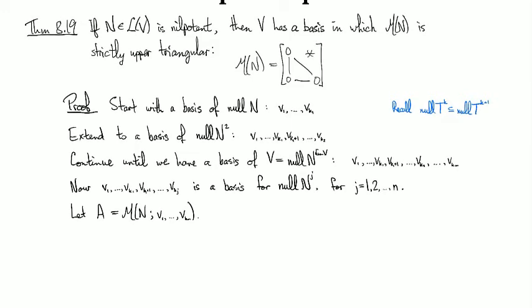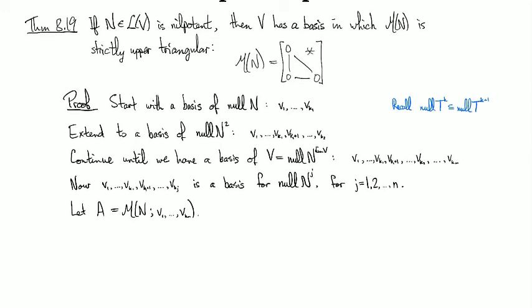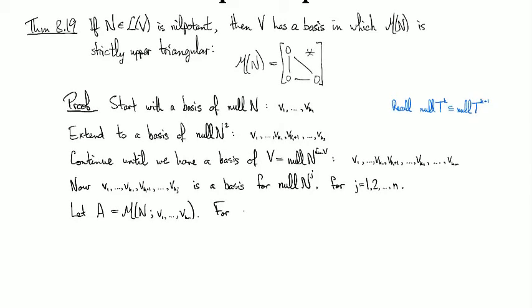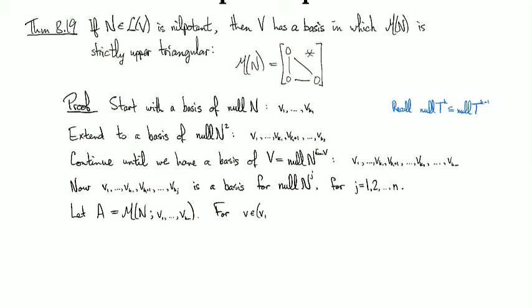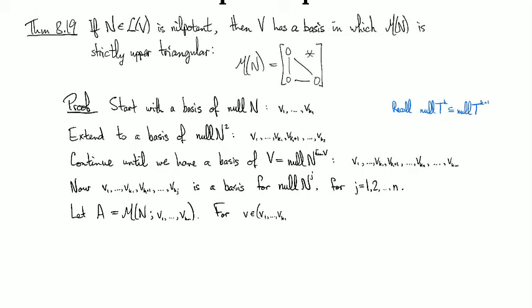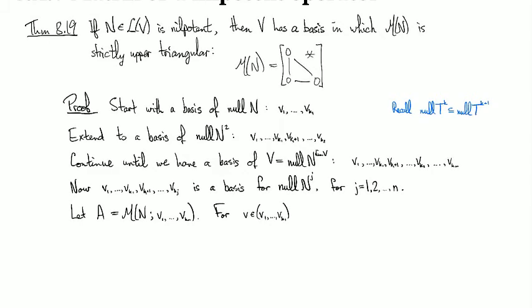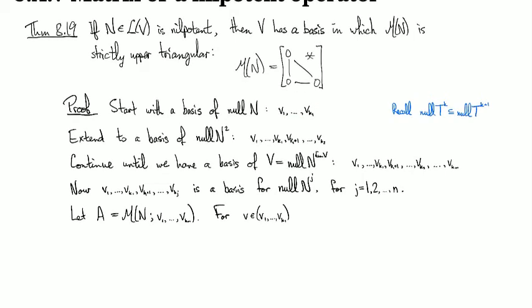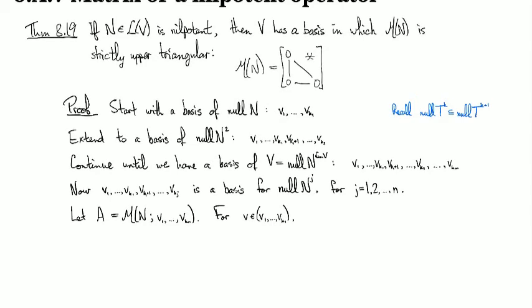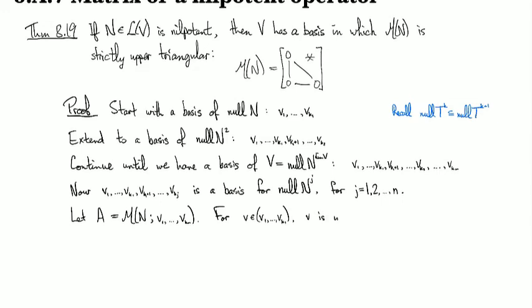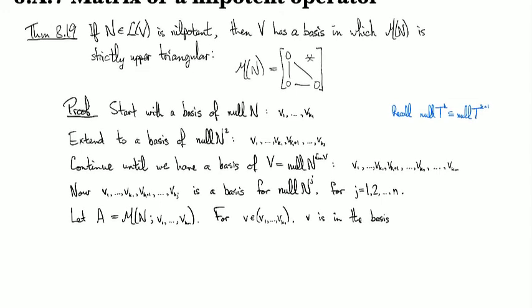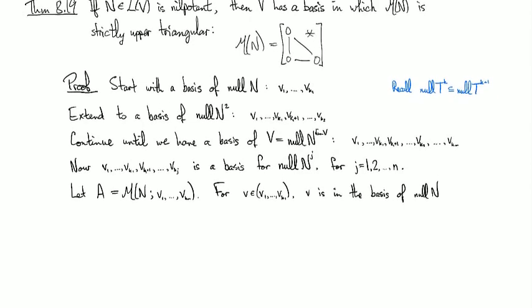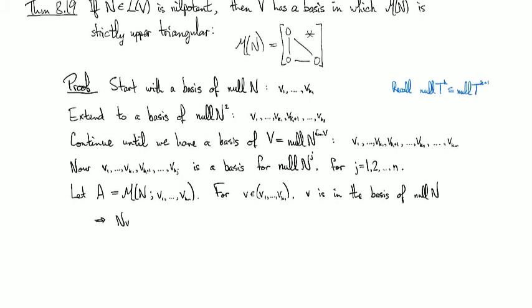Okay. So then let's see now. So if we look at one of these basis vectors, so V is going to be one of these basis vectors from the first cohort there. So these are the ones that we built at step one. Then we have that V is in the basis of the null space of N. So that implies that N times V is equal to zero.